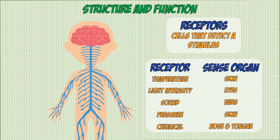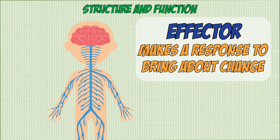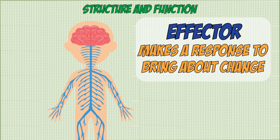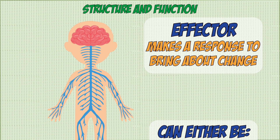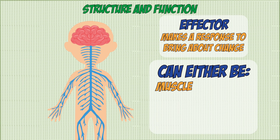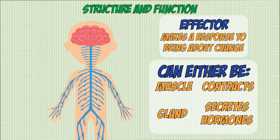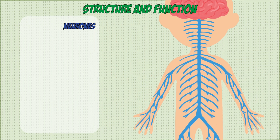The receptor is the thing that senses a change in the environment, but what actually responds to the change is known as an effector. This is always at the end of a nervous response and can either be a muscle that contracts or a gland that produces a hormone. The CNS, the receptors, and the effectors are all connected together by neurons.